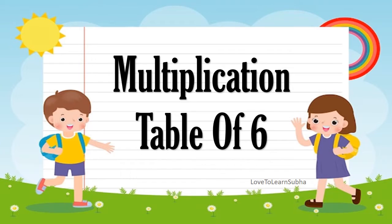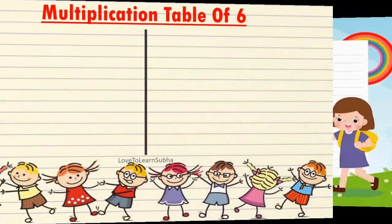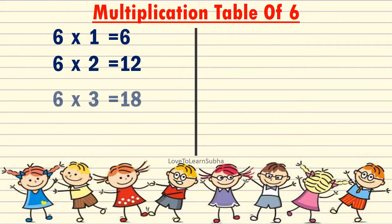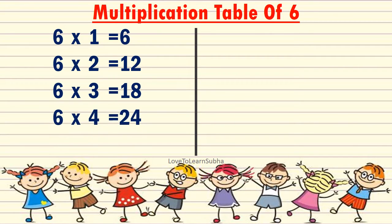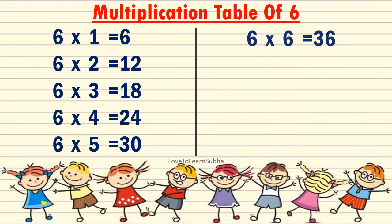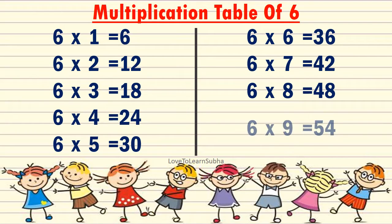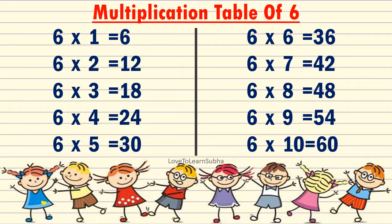Multiplication table of 6. 6 1's are 6, 6 2's are 12, 6 3's are 18, 6 4's are 24, 6 5's are 30, 6 6's are 36, 6 7's are 42, 6 8's are 48, 6 9's are 54, 6 10's are 60.